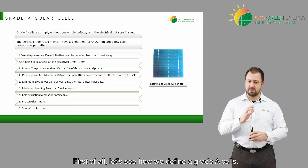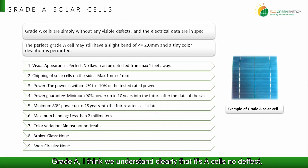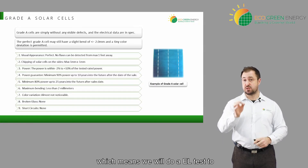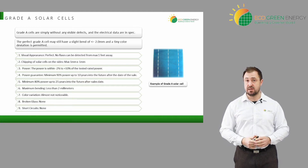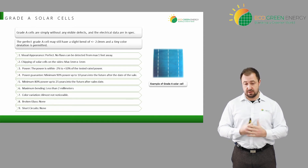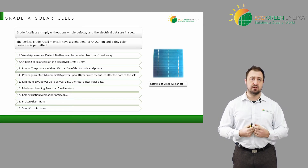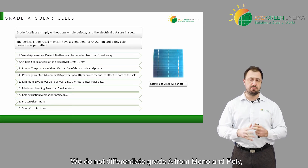Let's see how we define a grade A cell. Grade A — as we understand clearly — is a cell with no defect, no visual defect, high power, and no micro-cracks. We do an EL test to check if the cells have micro-cracks — cracks not visible by the eye, but only by the EL machine. The power must be efficient with no color difference. This is what defines a grade A cell. The grade A standard is the same for mono and poly — we do not differentiate, which is very important.